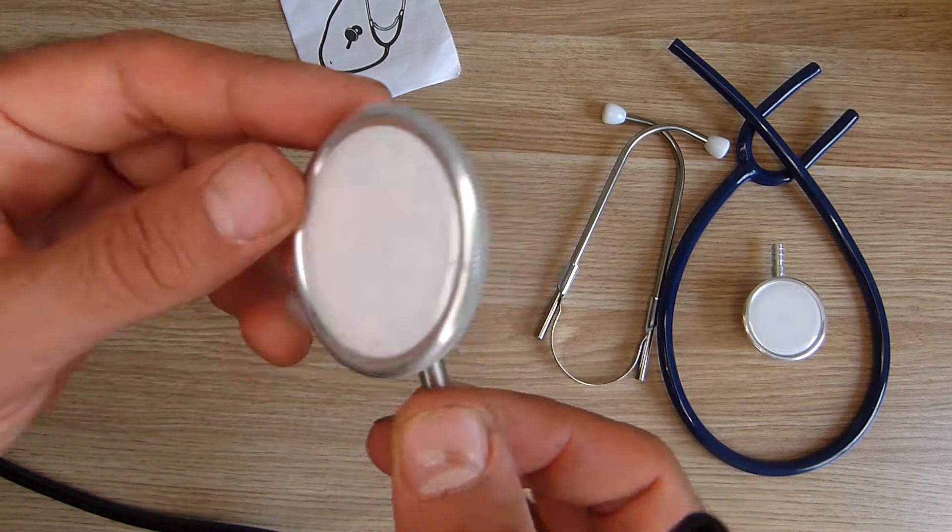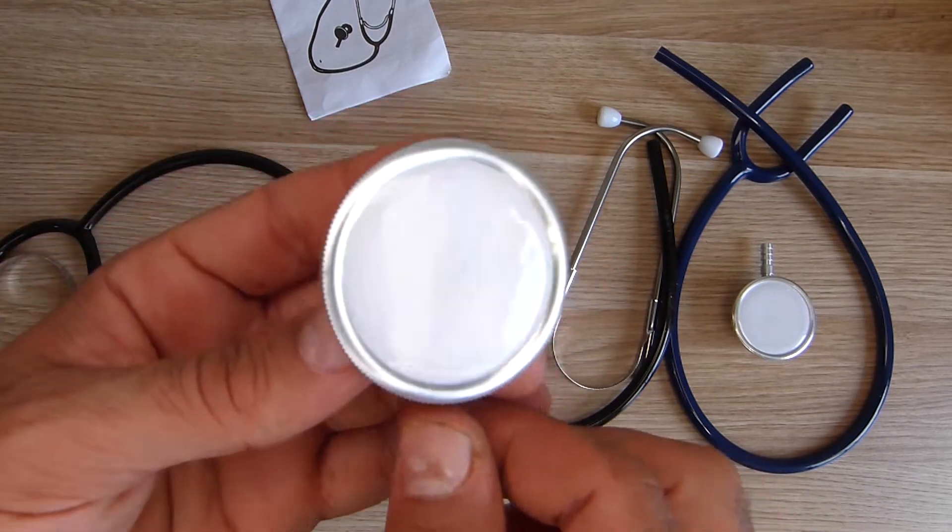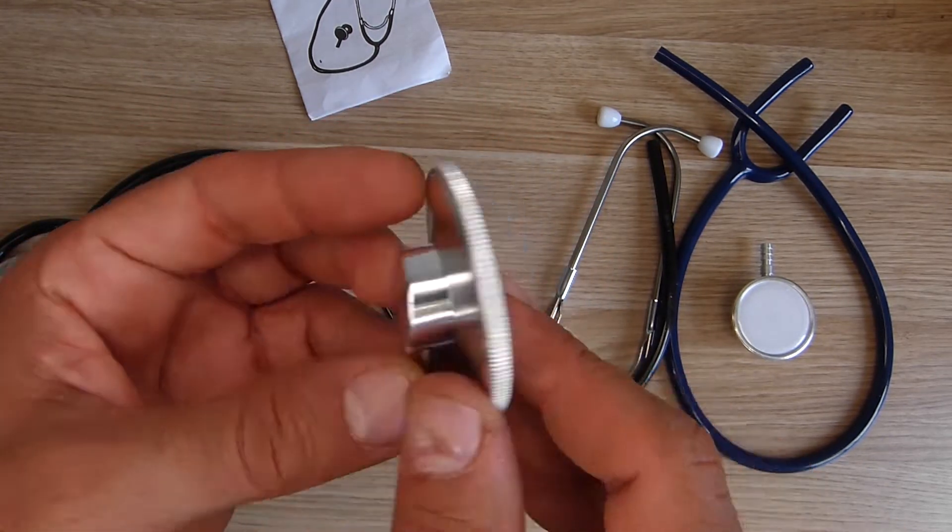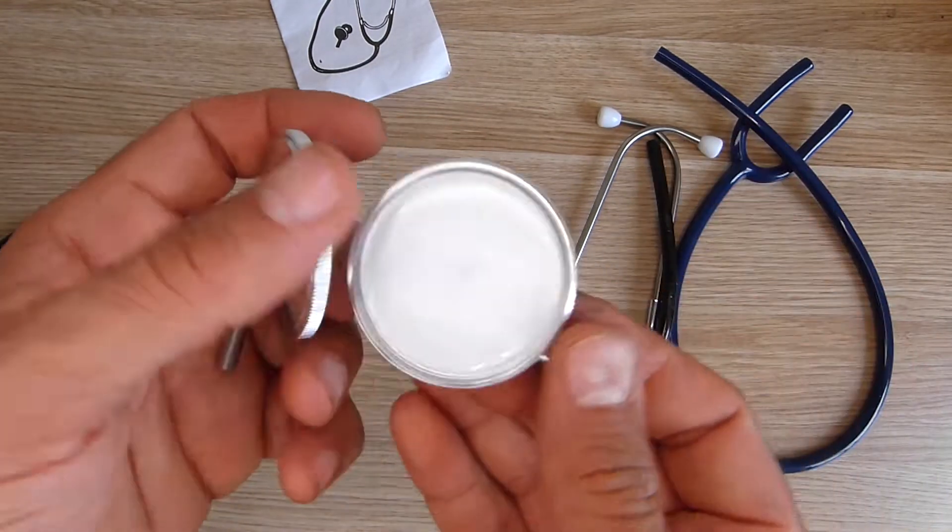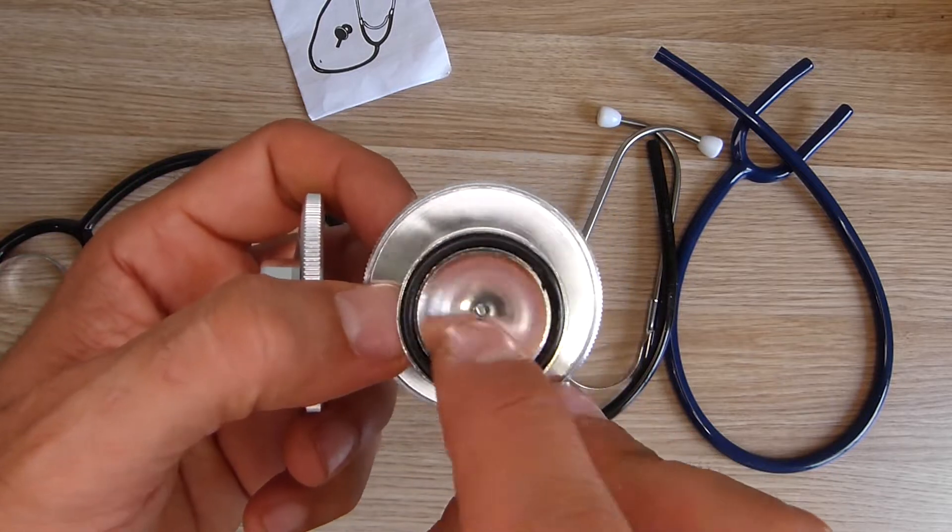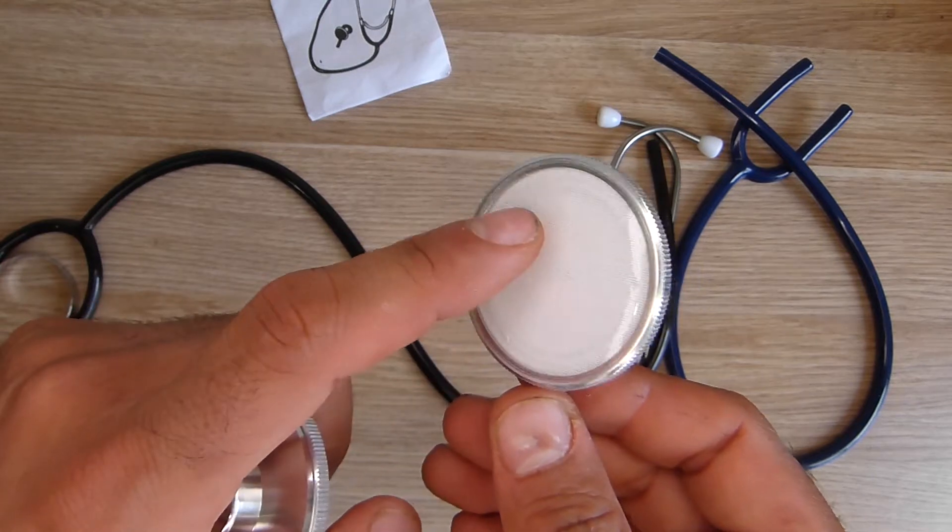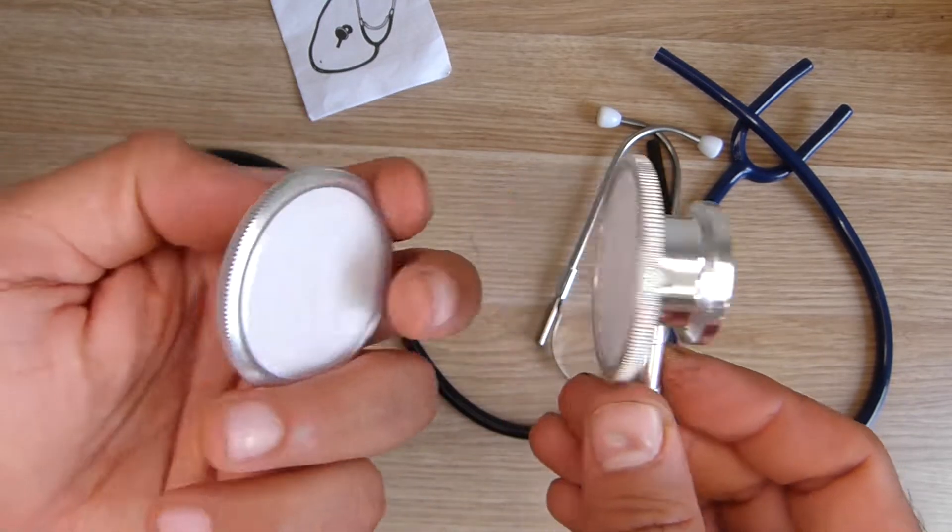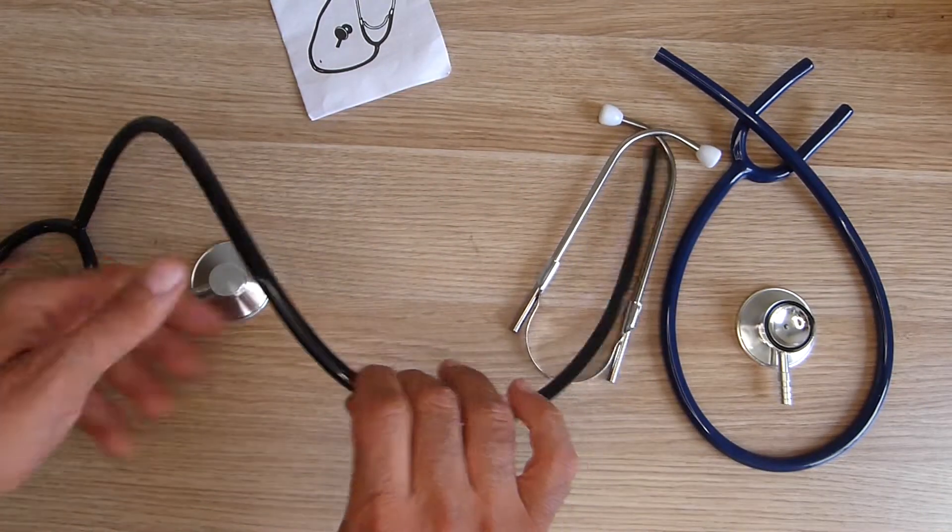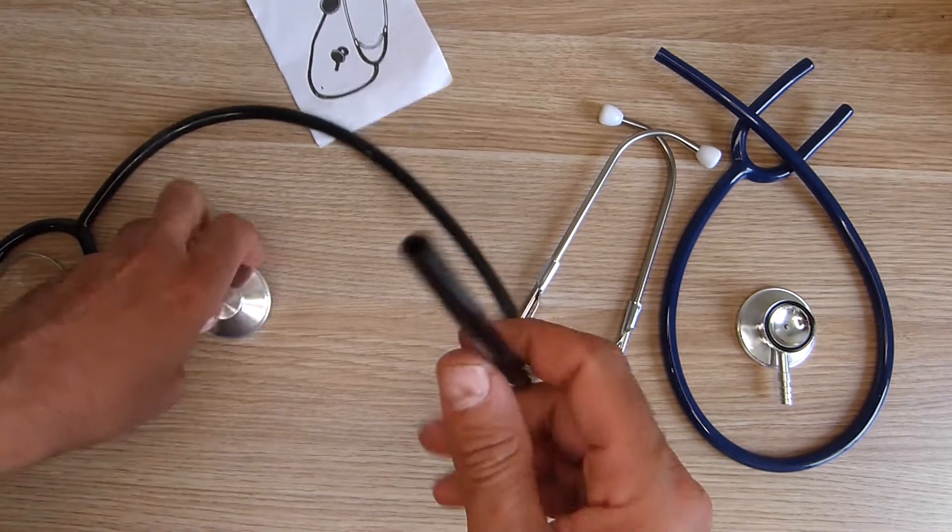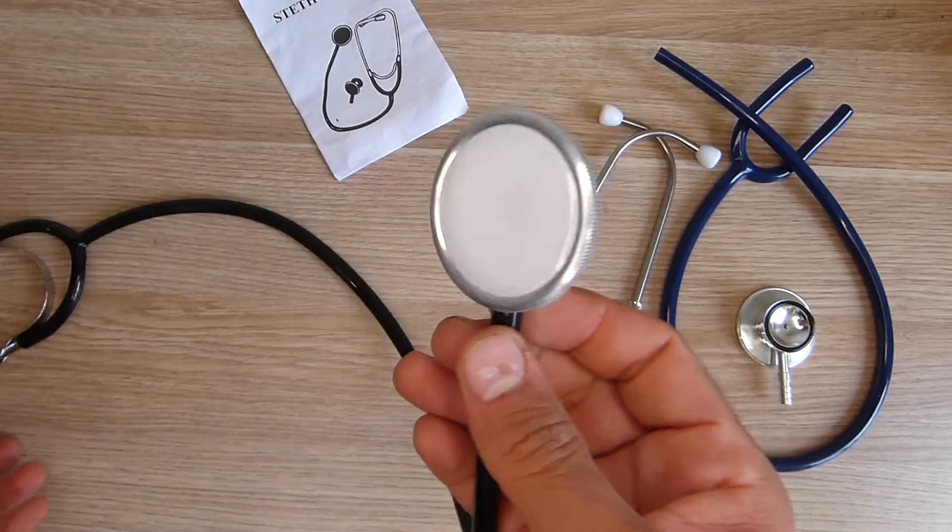And this is the listening head. It's just a diaphragm, while the other one has a diaphragm and another listening area. I believe this is for the higher frequencies and this is for the lower frequencies, but I don't know if it's working with this one. So yeah, you just assemble this like that.